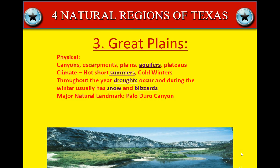The third region of Texas is the Great Plains. The physical characteristics are canyons, escarpments, aquifers — that's a big one to remember — and plateaus. The climate has hot, short summers but very cold winters. Droughts occur throughout the year, and winter usually brings snow. The major natural landmark in the Great Plains is Palo Duro Canyon, just north of Amarillo.